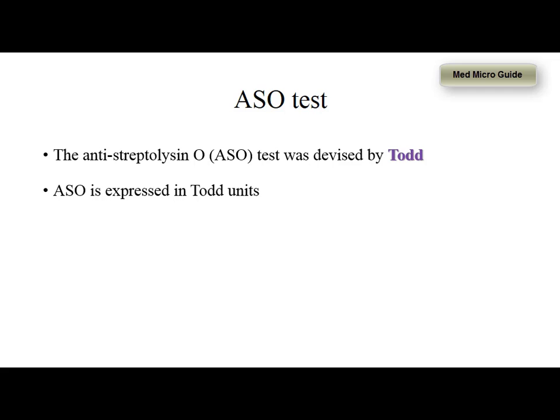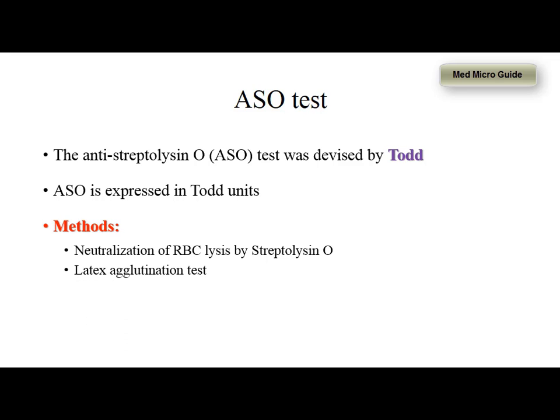The ASO titers can be detected by various methods. The original method of ASO estimation is by neutralization test. This is the reference method in which the ASO present in the patient's blood will neutralize the streptolysin O, thereby preventing the lysis of RBCs. Nowadays, the neutralization test is replaced by the latex agglutination test. However, the sensitivity of the latex agglutination test is very low.